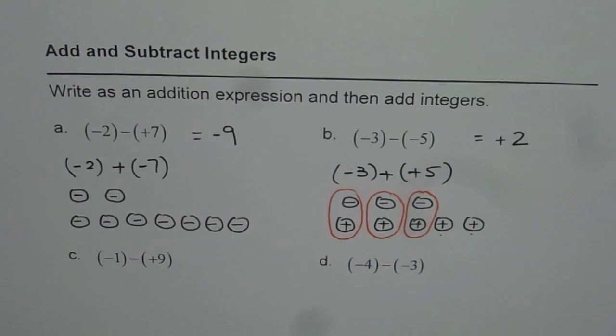So that is how we can add and subtract integers by first writing the whole expression as an addition expression and then using counters. I'd like you to follow the same technique and solve part C and D. Thank you and all the best.